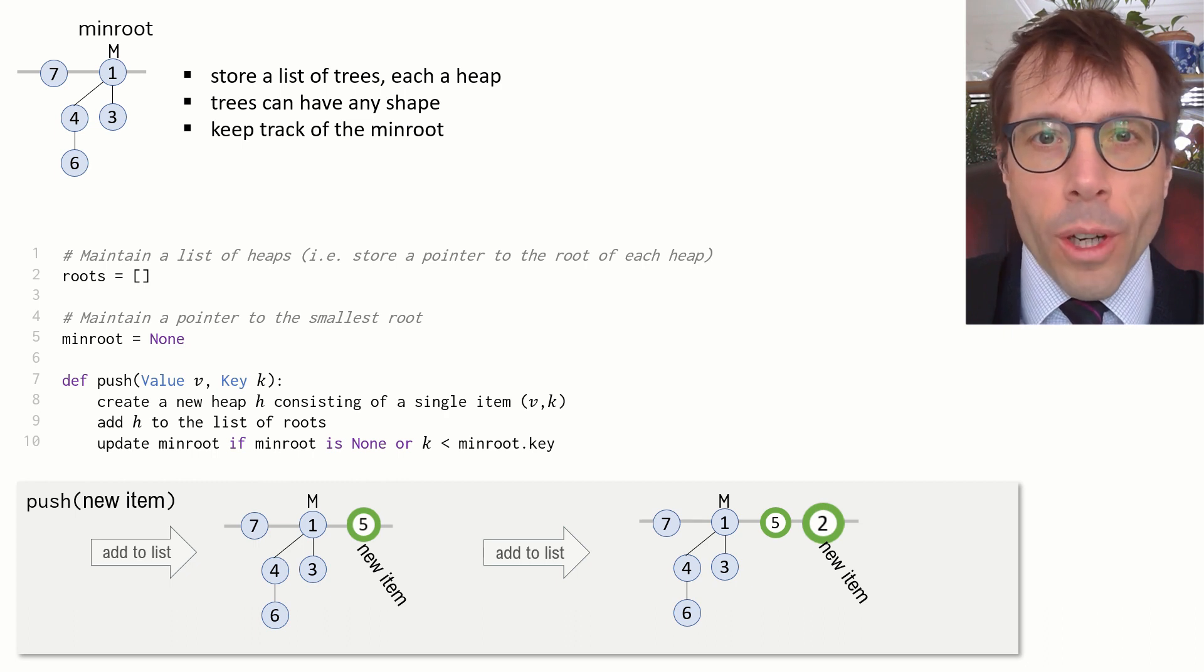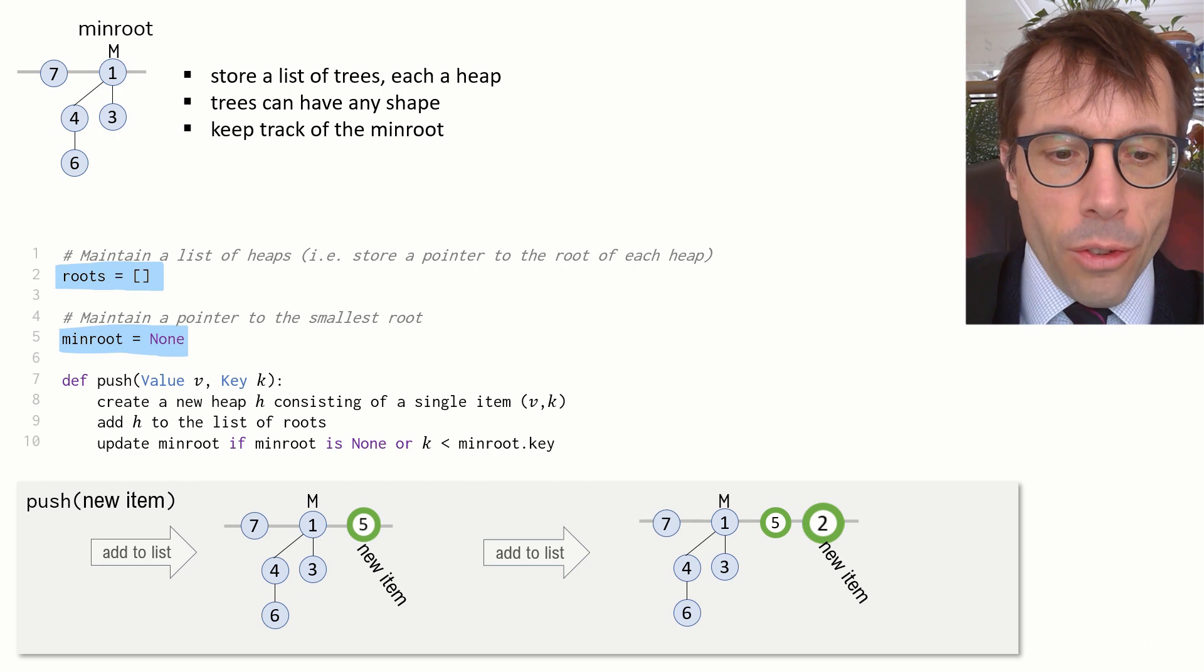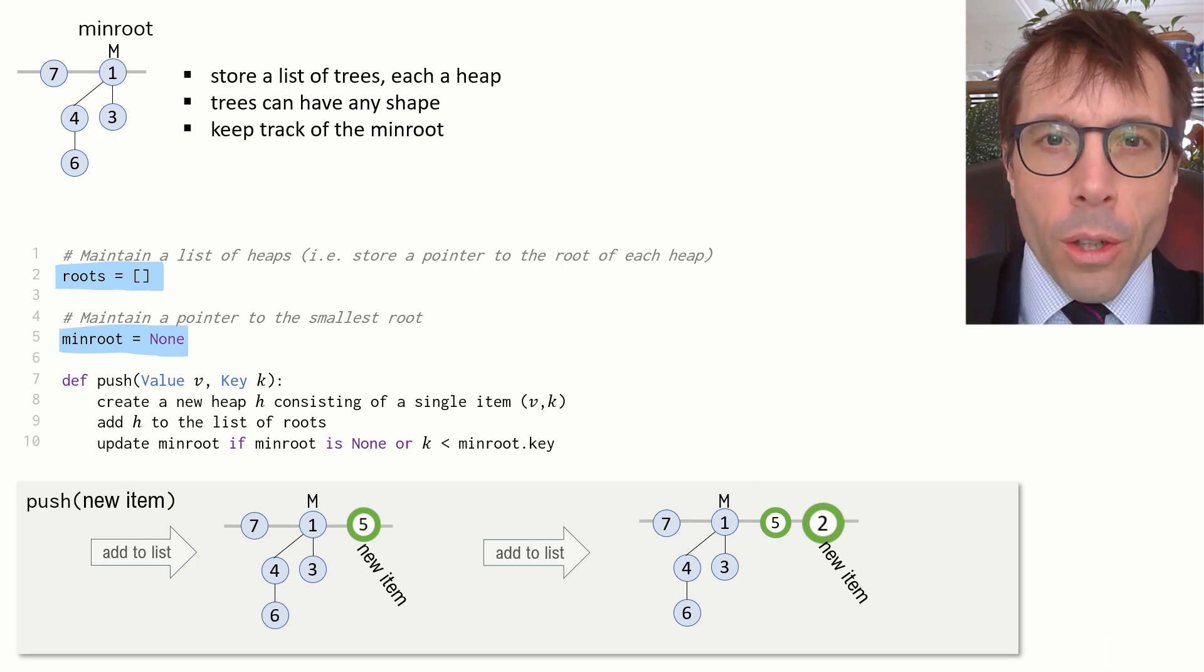Let's just write out the code for it. There's nothing interesting in this code snippet here, except to say this is what the Fibonacci heap needs to store. It stores a list of pointers to the root node of each of the heaps, and it stores a pointer to the smallest of the root nodes. Okay, so push is trivial. Next, let's look at popmin.